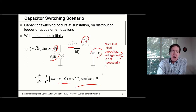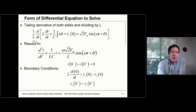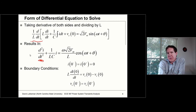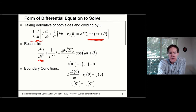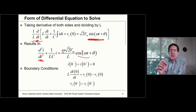This form is not what I need to solve a differential equation. I want to get rid of all the integrals, so I take the derivative of both sides and divide through by L to get the highest-order derivative with a coefficient of one. I get the second derivative of current plus (1/LC)·i equal to a term on the right of the form (√2·Vm/L)·ω·cos(ωt + θ), since taking the derivative of sine gives ω·cosine.